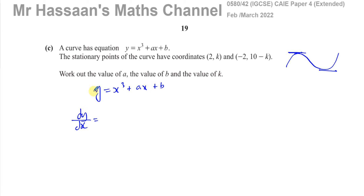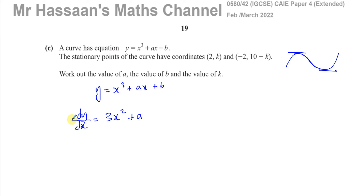To find dy/dx, we differentiate the expression. When differentiating, you multiply by the power and reduce the power by one. For the x term, the power is 1, so it just becomes a — because 1 times a times x to the power of zero gives you a times 1, which is a. Any constant term when you differentiate becomes zero. So dy/dx equals 3x squared plus a.